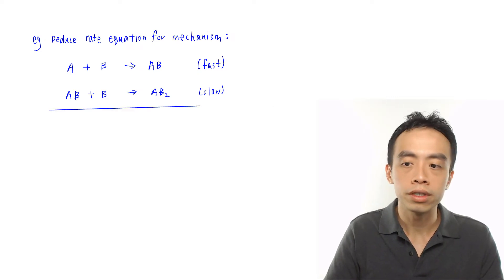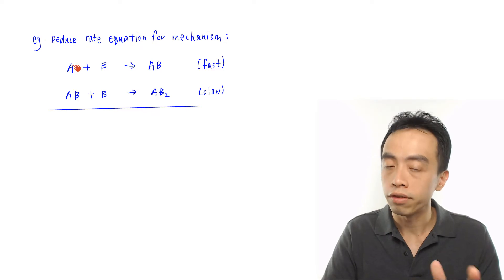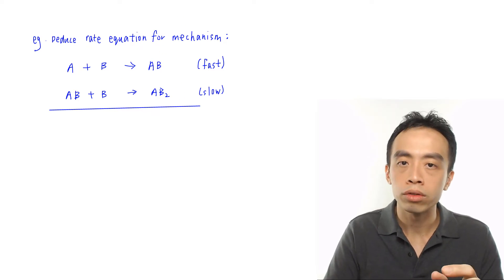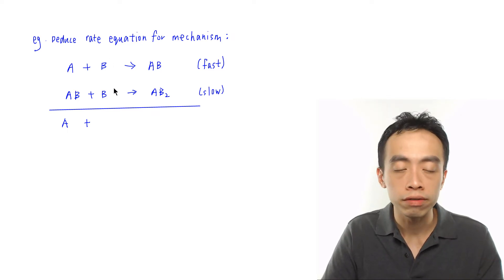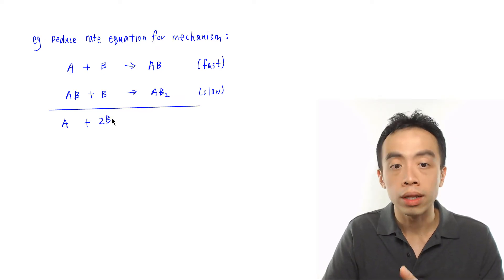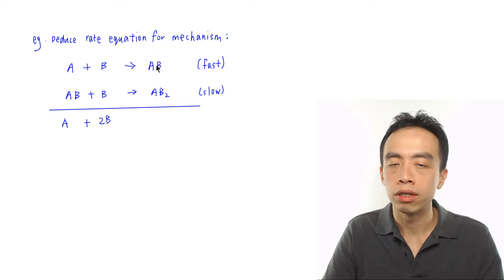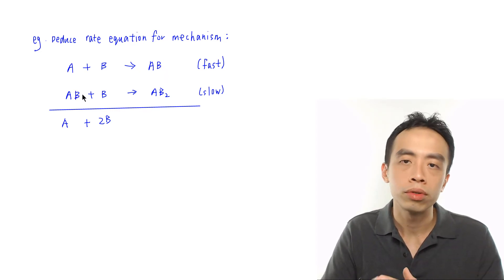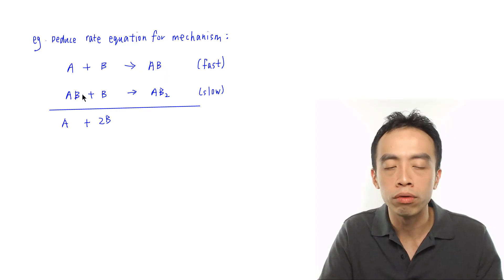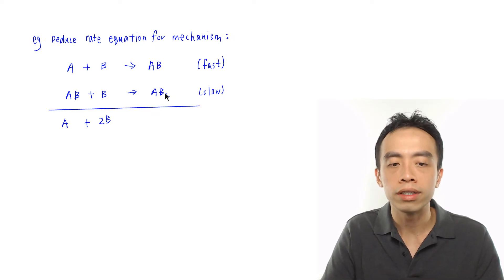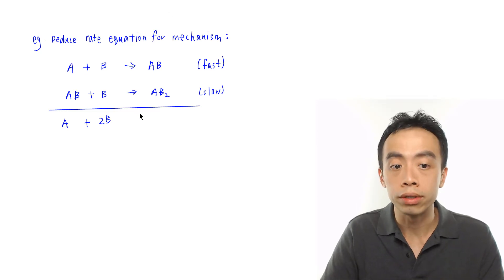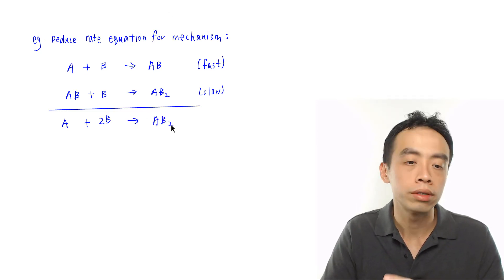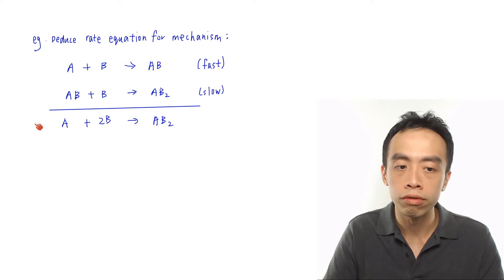A is on the left hand side and doesn't appear on the right hand side, so A is a reactant. I have two B's on the left hand side and no B on the right hand side, so B is a reactant — giving 2B. AB is formed in the first step and used up in the second step, so it is an intermediate and doesn't appear in the overall equation. AB₂ is formed in the second step and doesn't appear on the left hand side, so AB₂ is the product. This gives us the overall equation.